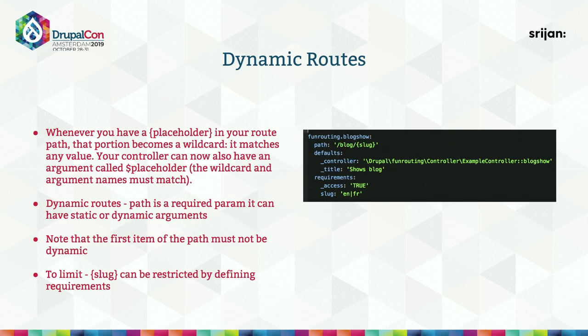Systems don't just function on static routes — we also have dynamic routes. Here, slug is a wildcard placeholder that can take any value unless defined. In this example, slug is restricted to 'en' or 'fr', so if a user enters either of those values, the route returns true and the block_show function is called. One important thing: only the last segment of the path can be dynamic — slash slug slash block is not permitted.